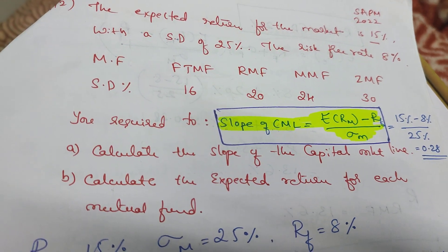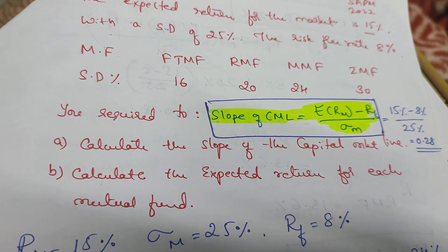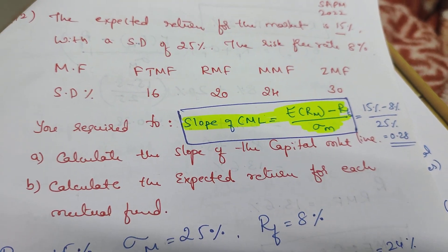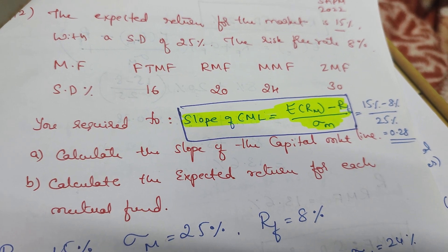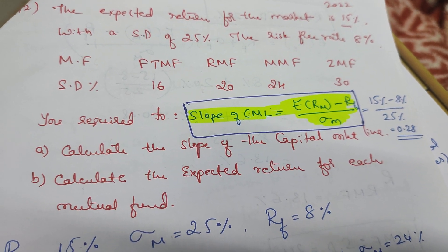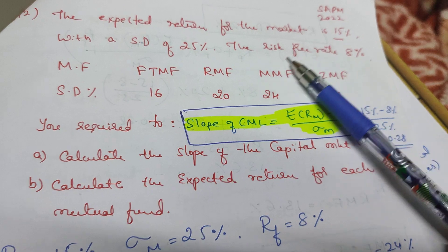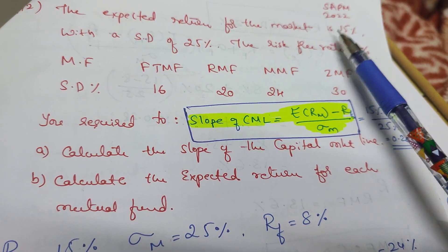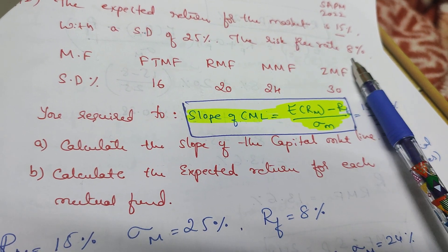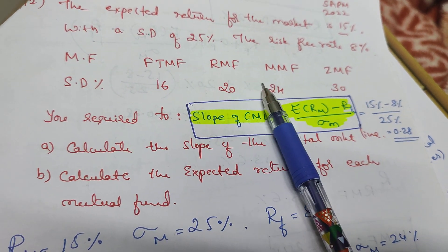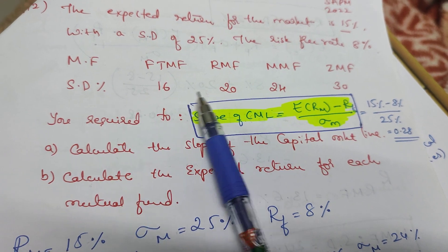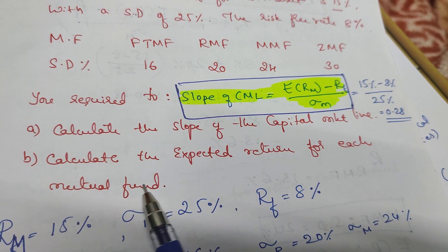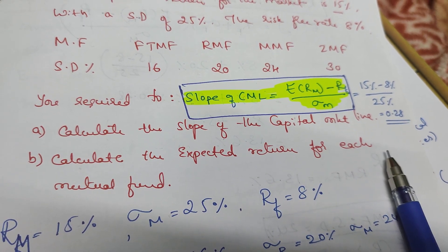This is the Capital Asset Pricing Model, capital market line based problem. The expected return for the market is 15%, with a standard deviation of 25%. The risk-free rate is 8%. We are dealing with individual mutual funds. In the calculation, find the slope of the capital market line and calculate the expected return for each mutual fund.